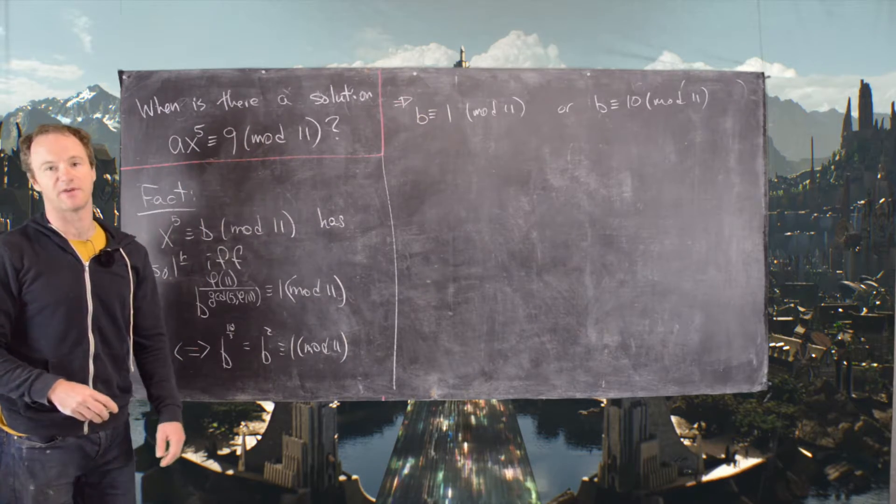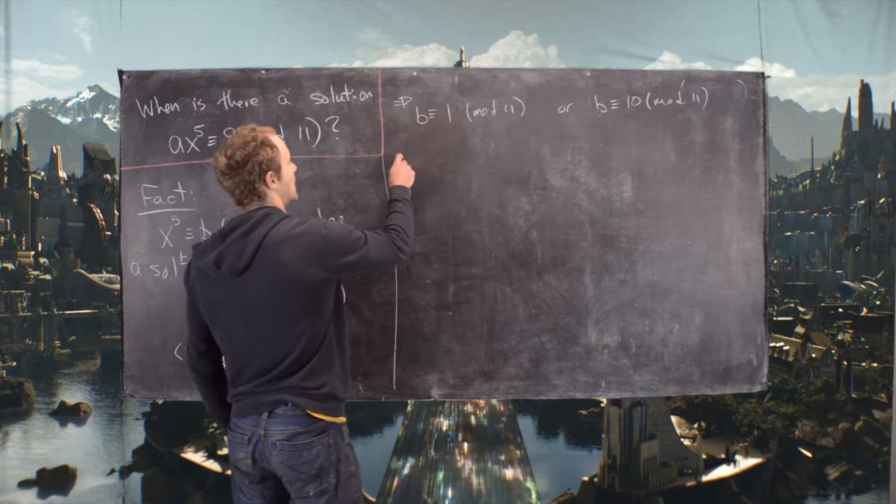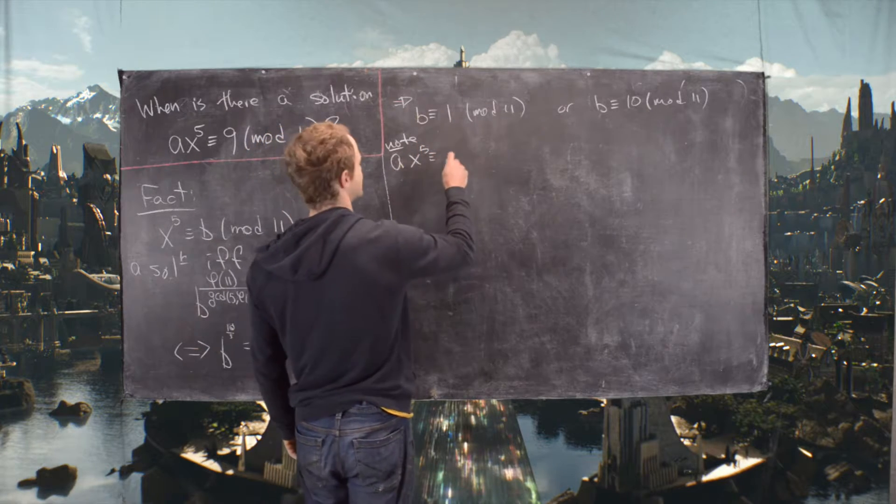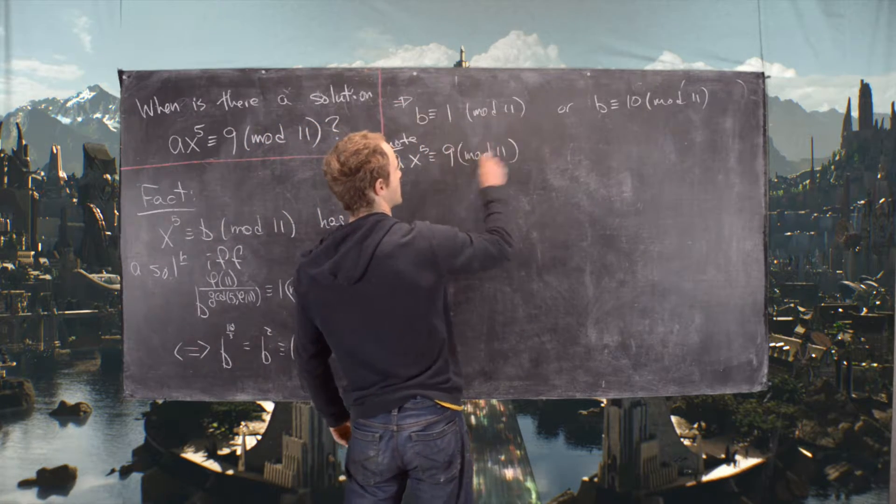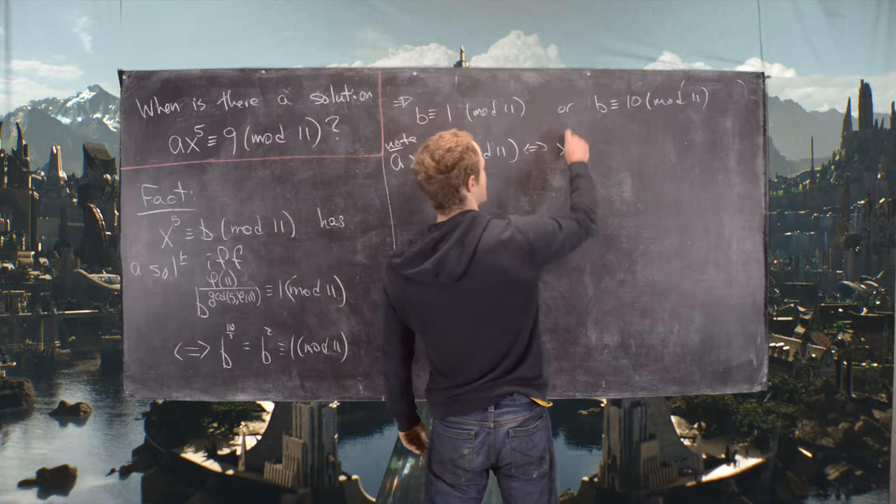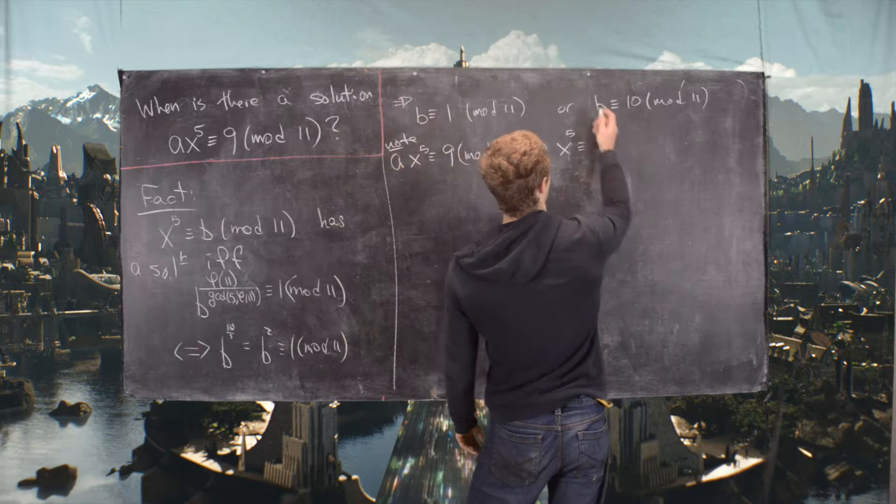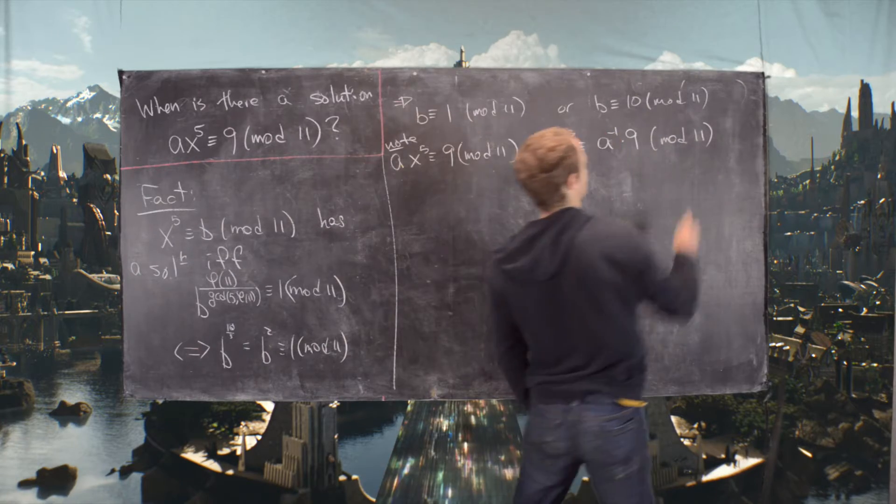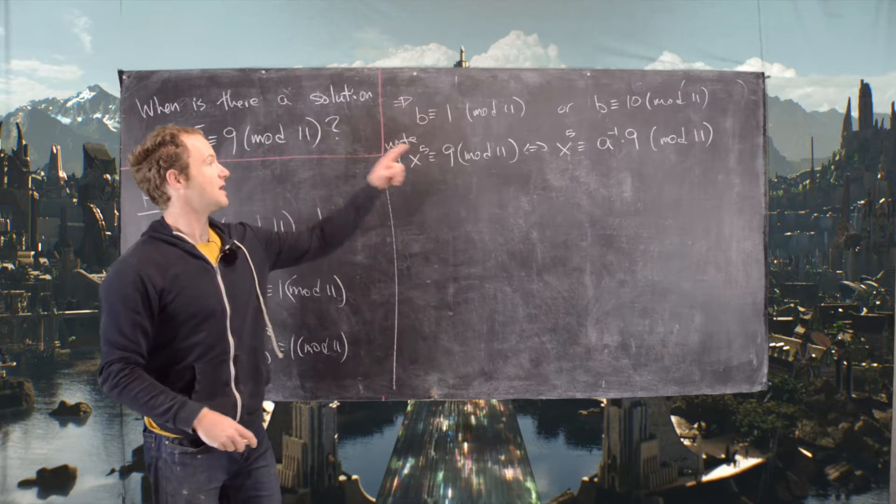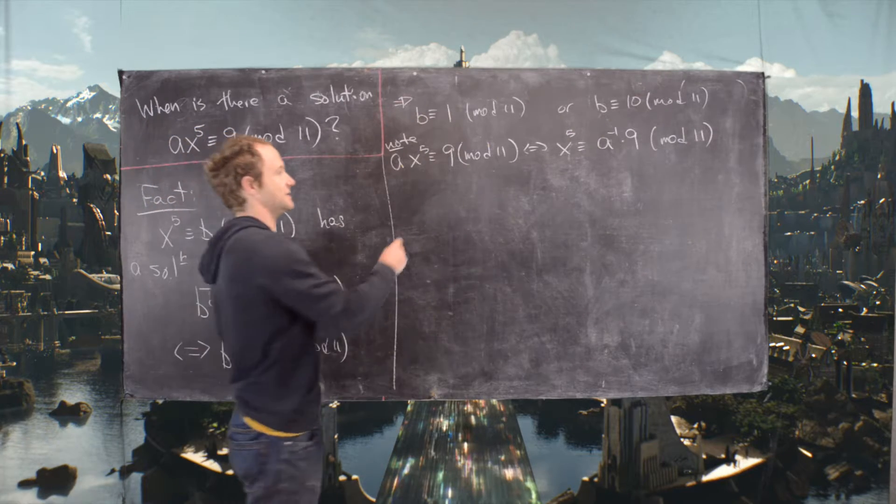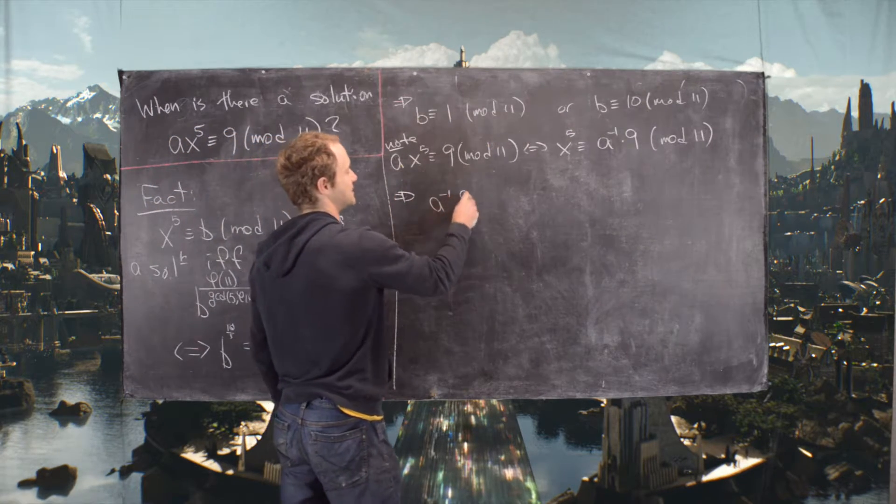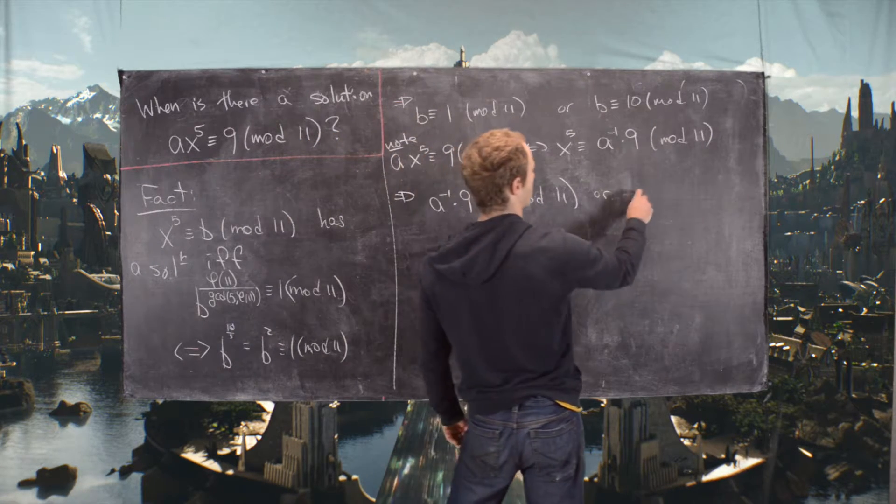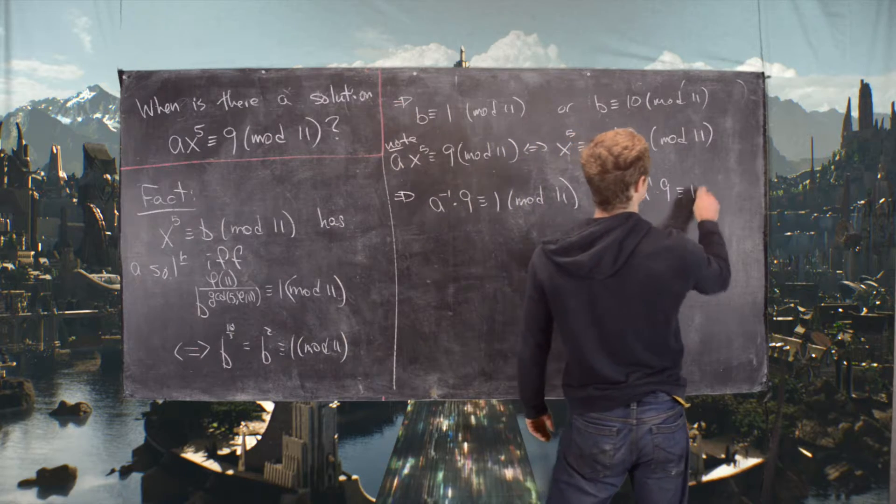So now let's rewrite that in terms of our equation. Our equation Ax^5 ≡ 9 (mod 11) is equivalent to x^5 ≡ A^(-1) · 9 (mod 11). But B is playing the role of A^(-1) · 9, so that tells us that A^(-1) · 9 needs to be 1 (mod 11) or A^(-1) · 9 needs to be 10 (mod 11).